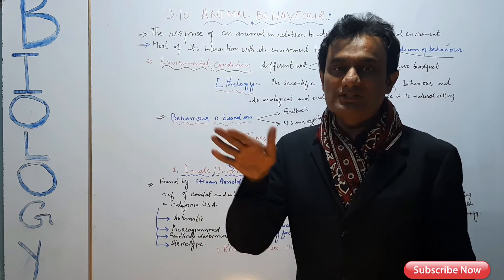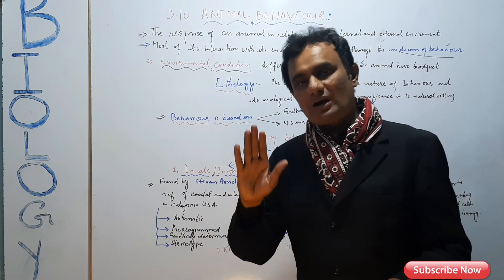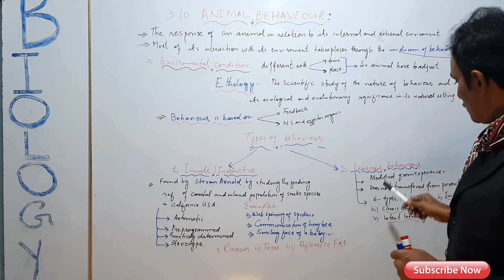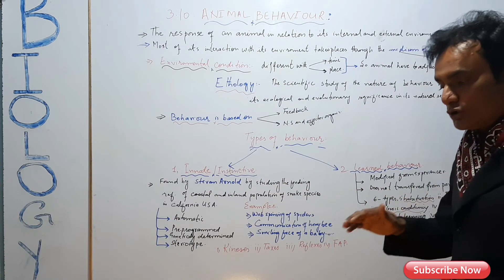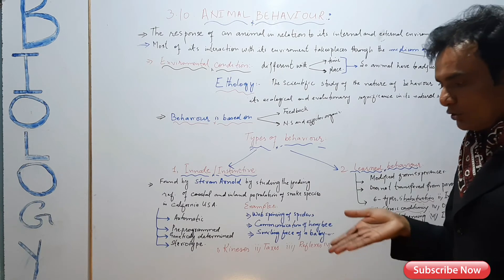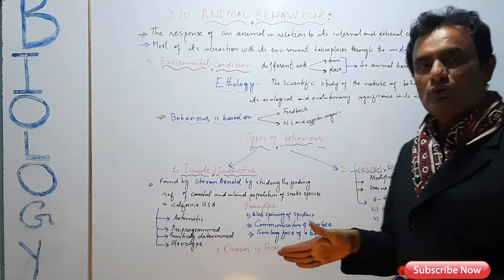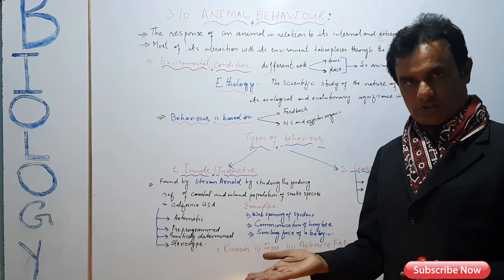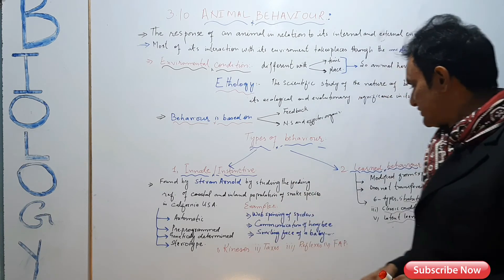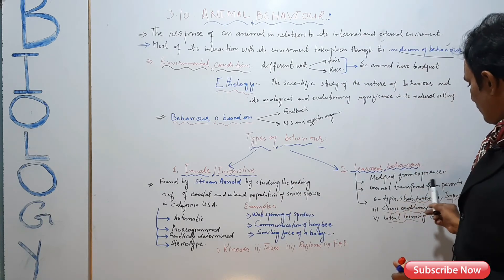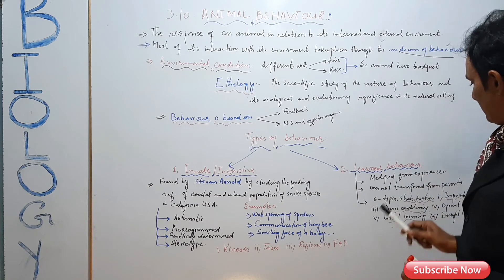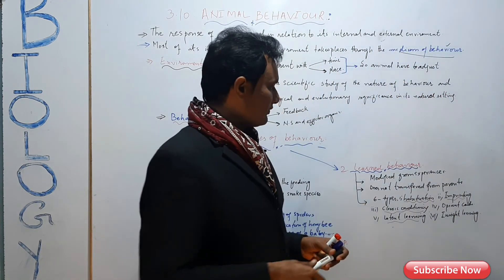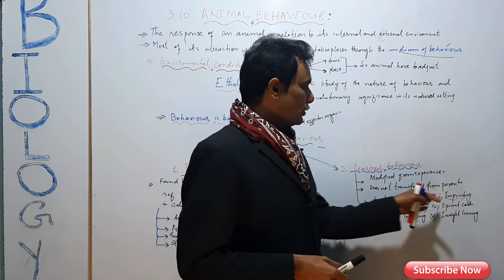Learned behavior is not transferred from the parent — it is modified through experience. These changes can be temporary or permanent. There are 6 types of learned behavior: habituation, imprinting, classical conditioning, operant conditioning, trial and error, latent learning, insight learning, and reasoning.